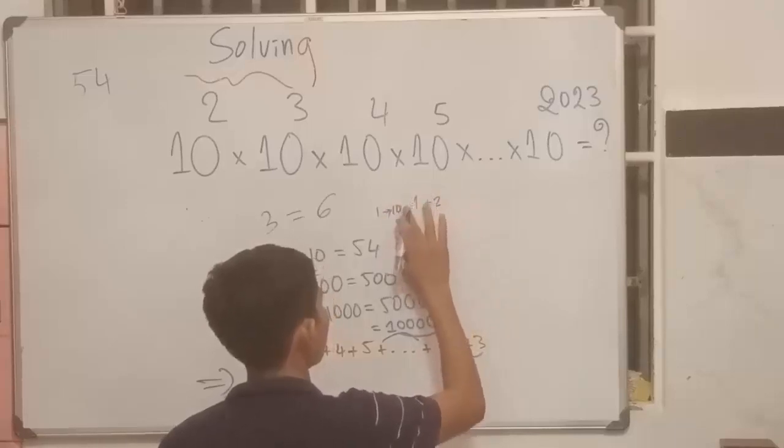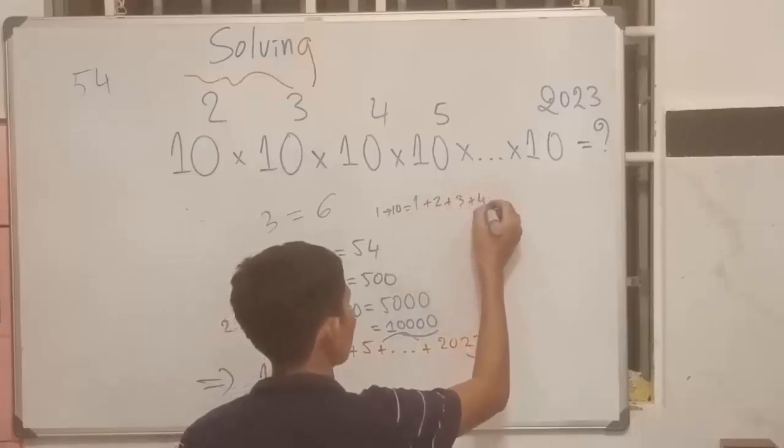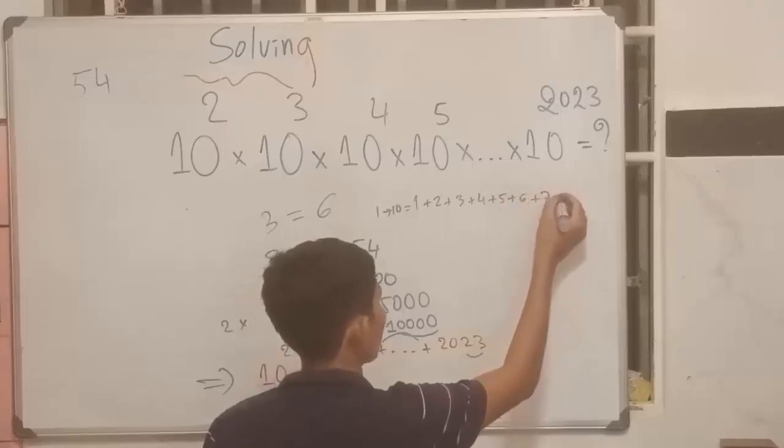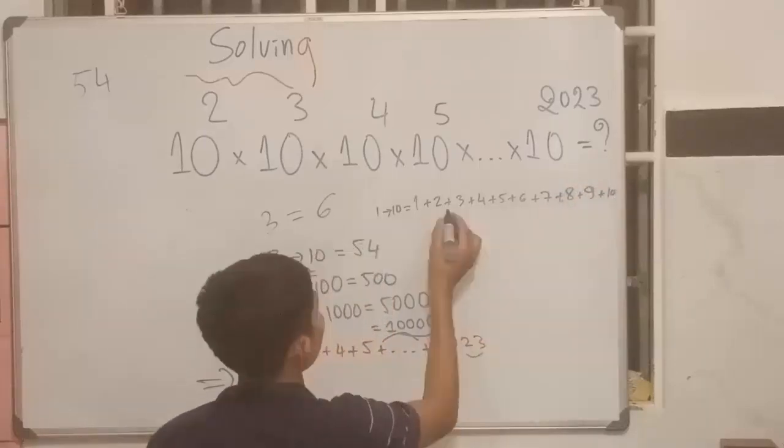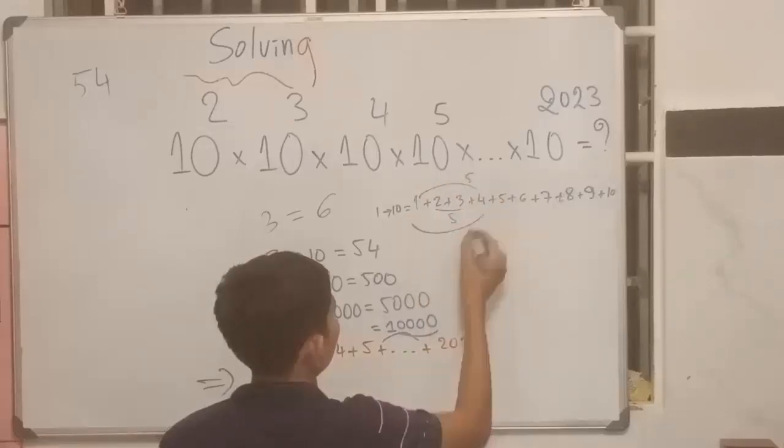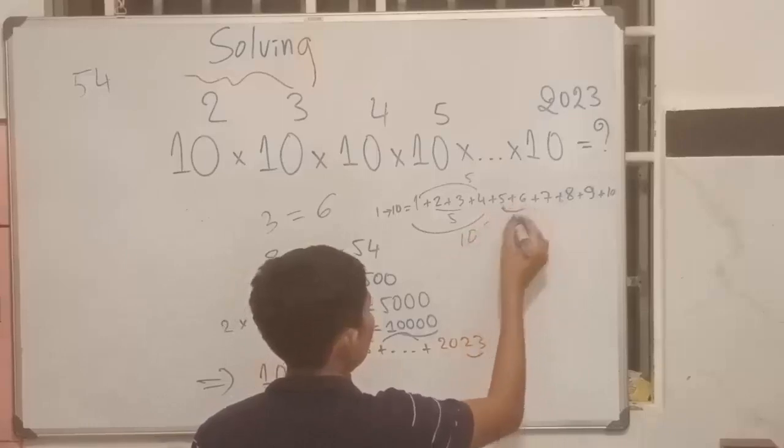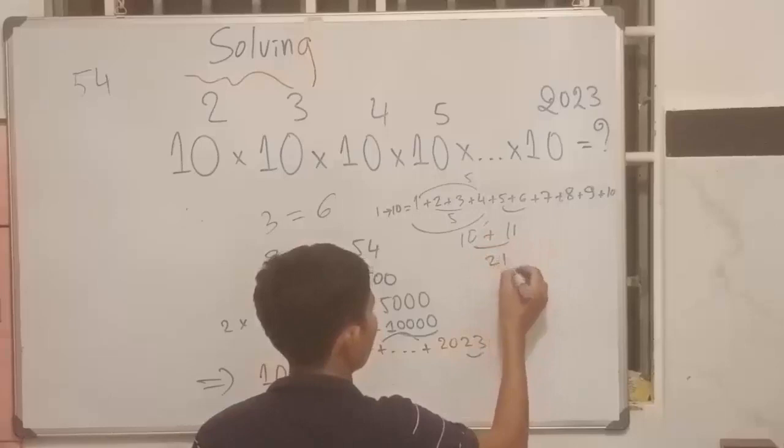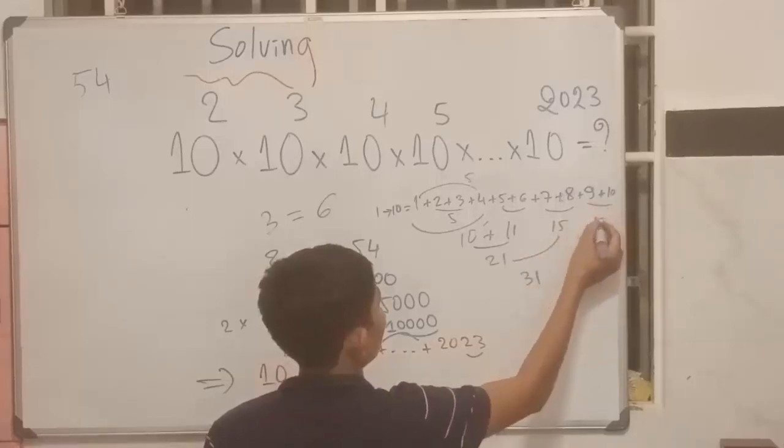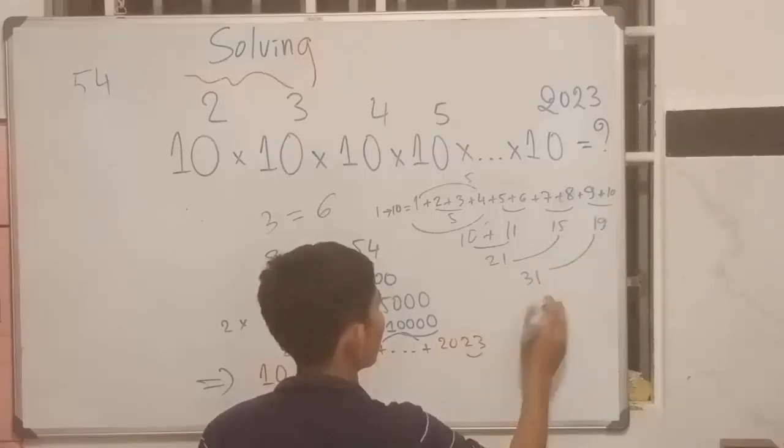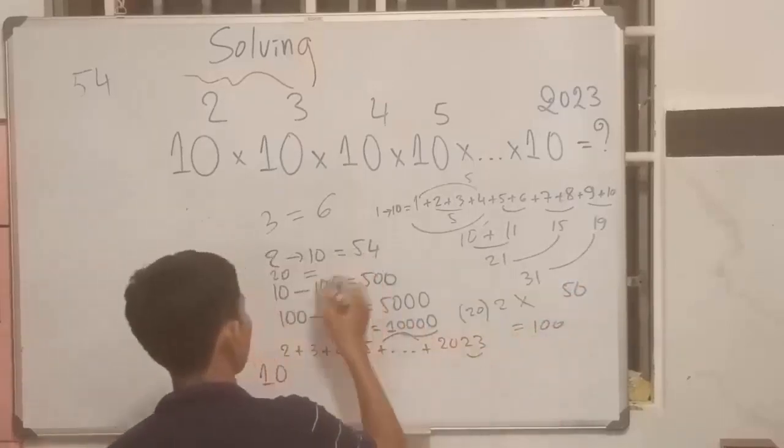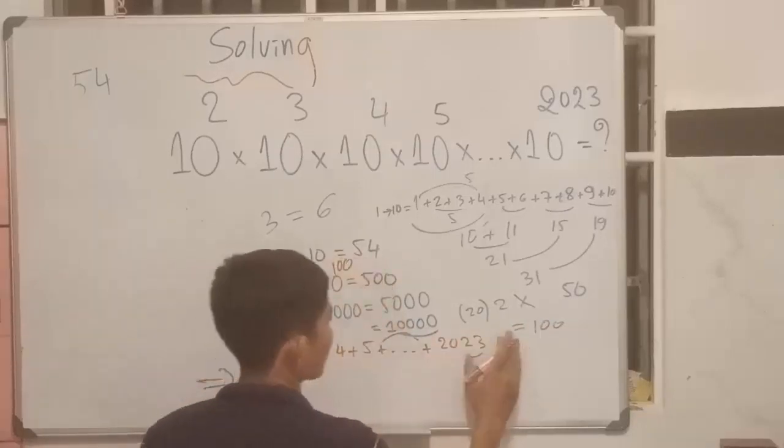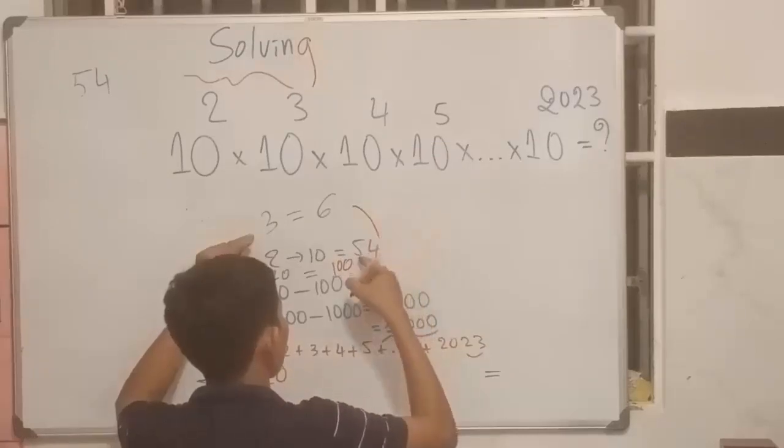1 plus 2 plus 3 plus 4 plus 5 plus 6 plus 7 plus 8 plus 9 plus 10. So 1 plus 2 is 3, 3 plus... when 10 plus 11 is 21, 21 plus 15 is 36.